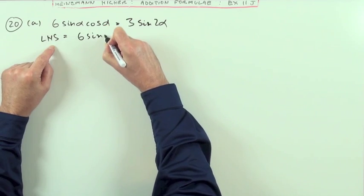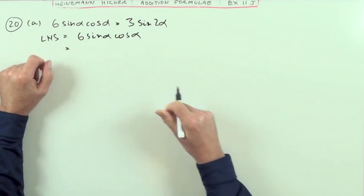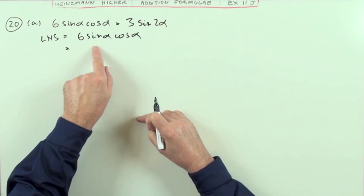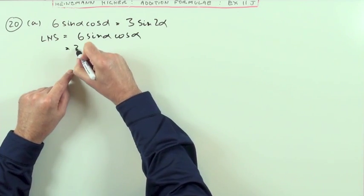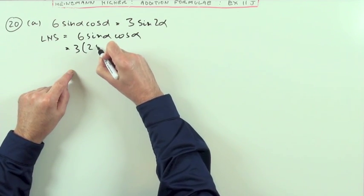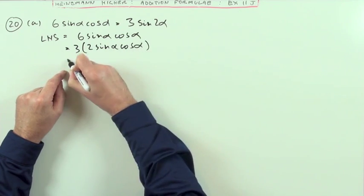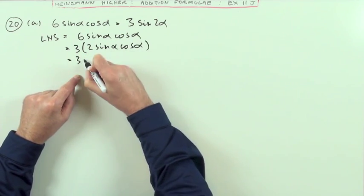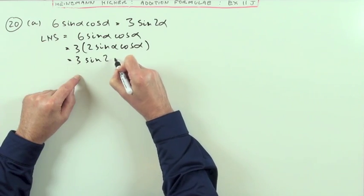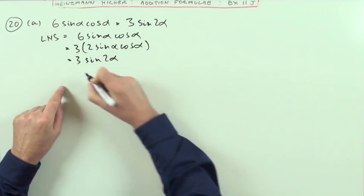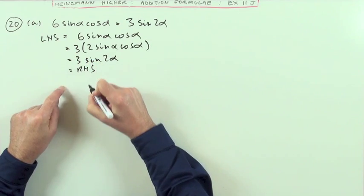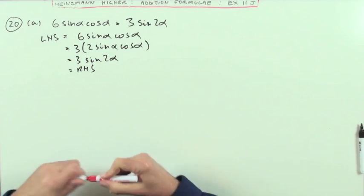That's 6 sin alpha cos alpha. Then it's just a little bit of intuition. You recognize that as part of the double angle formula. If I take 3 out of that and leave the factor 2, I've got 2 sin alpha cos alpha, which I immediately recognize as the sign, the expansion for the sign of 2 alpha, and there it is done. So equals right-hand side, and that's it finished. That's it demonstrated.